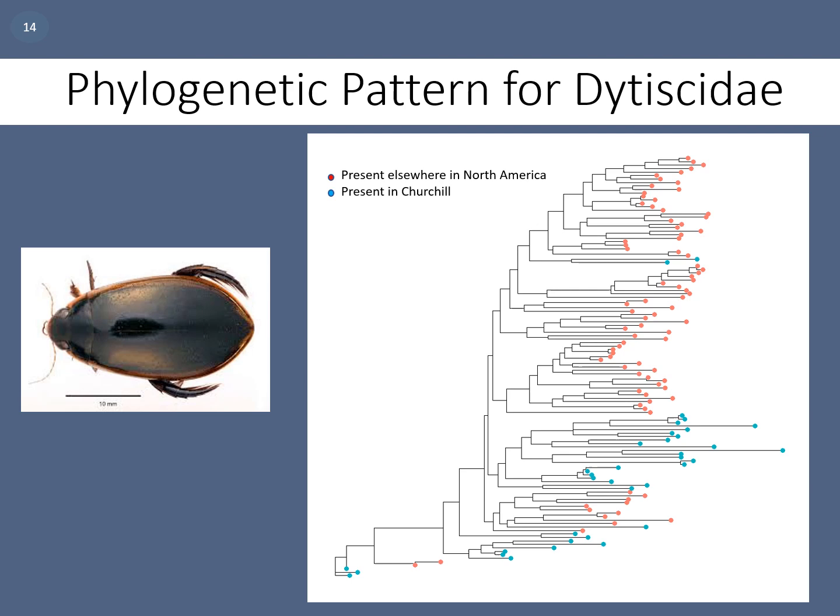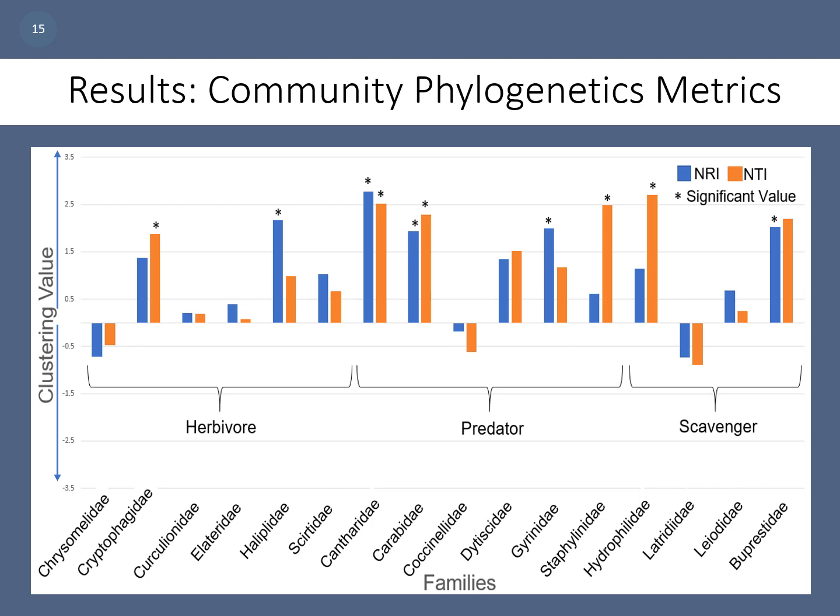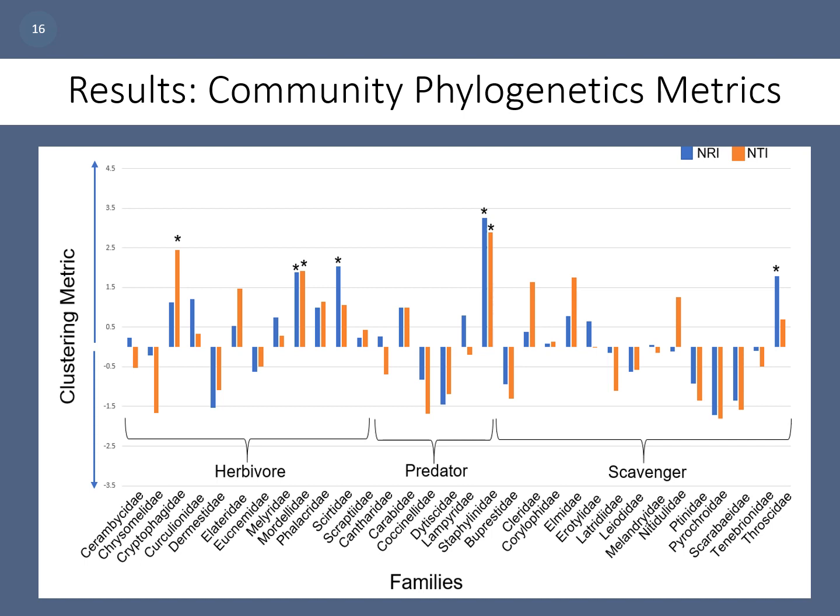This graph shows the phylogenetic clustering pattern for families present in Churchill. Most families exhibit a clustering pattern, with many families showing significant clustering. The next graph shows the same thing but for Guelph, Ontario. While there are still some significantly clustered families, there are a far greater number of over-dispersed families there than in Churchill. A t-test found no significant difference between the two regions, though it is possible that Guelph is still far enough north to experience significant environmental filtering. However, comparing the two graphs, there does appear to be a trend toward clustering in the north.